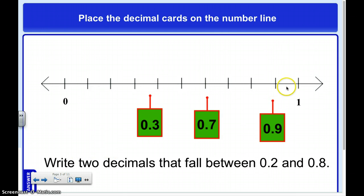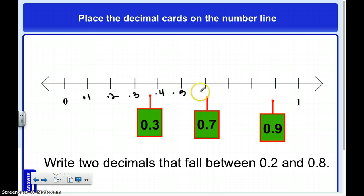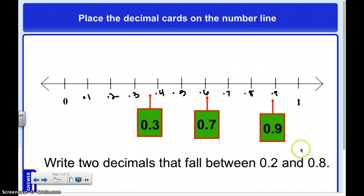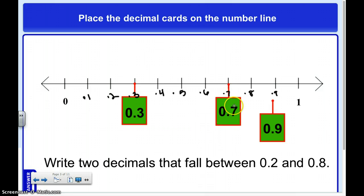Again, I'm dealing with tenths, so I know what this number line is counting by. I'll number it again: one-tenth through ten-tenths, or one whole. It says write two decimals that fall between two-tenths and eight-tenths. Well, three-tenths falls in between there, and seven-tenths.